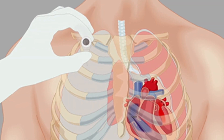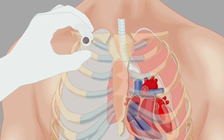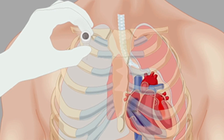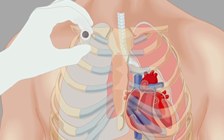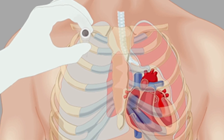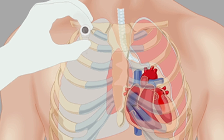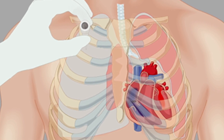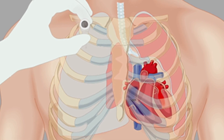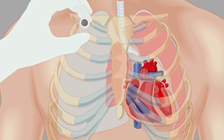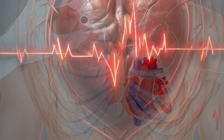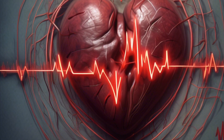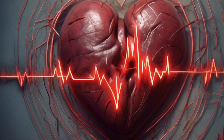A couple of final reminders: make sure when you're decompressing you're decompressing the affected side. Make sure you're using a 10 to 14 gauge needle three and a quarter inches in length. Make sure you're only decompressing patients with a life-threatening tension pneumothorax or a traumatic arrest patient with signs of chest trauma.